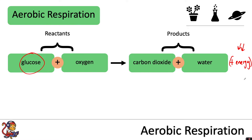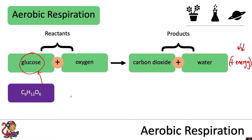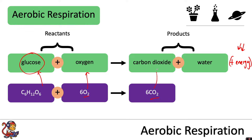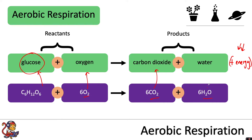As a symbol equation: C6H12O6 (glucose) reacts with O2 (oxygen) to produce CO2 (carbon dioxide) and H2O (water). The sixes are just to balance the equation.